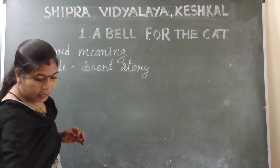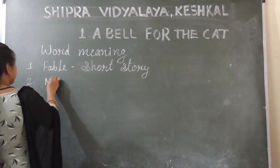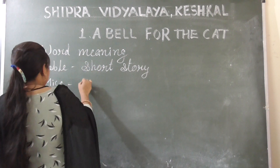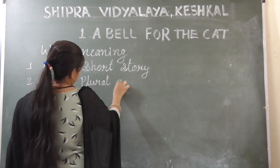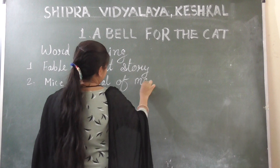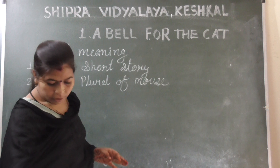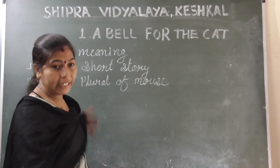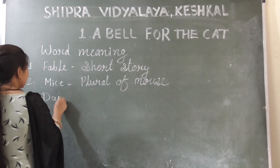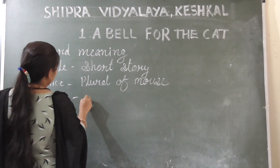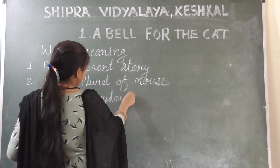Second word: mice, M-I-C-E. Mice is a plural of mouse. Next word: daily. Daily means every day — E-V-E-R-Y D-A-Y.